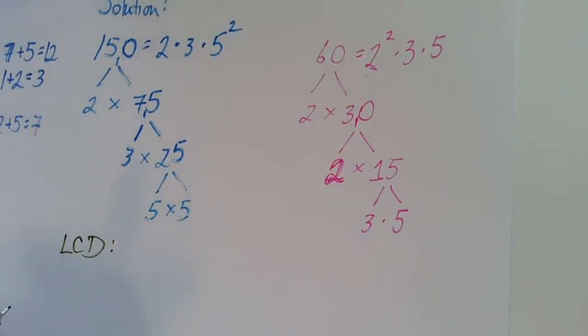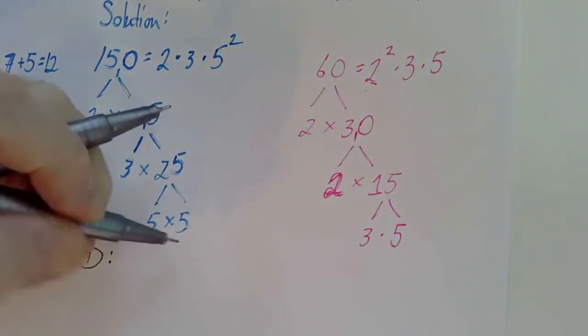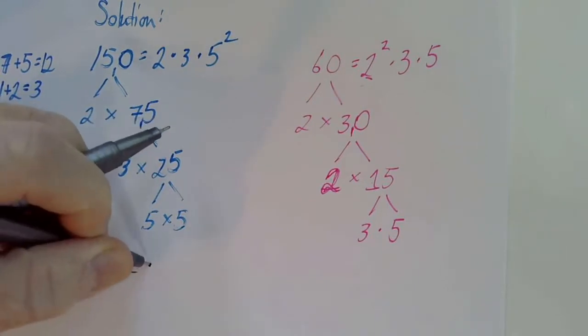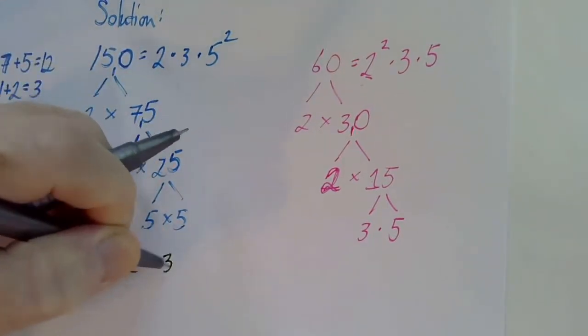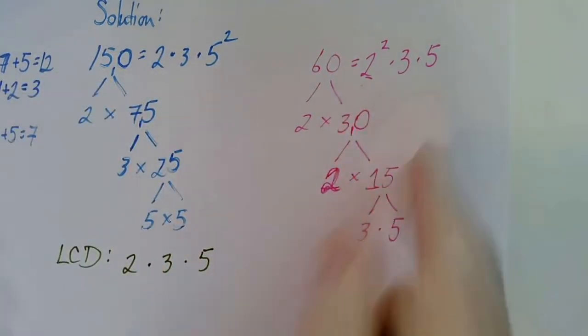I know that I have to have every one of these prime numbers as a base. So I have to have a two. I have to have a three. I have to have a five. And we have the same three numbers on the other one, so that's good.